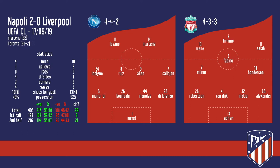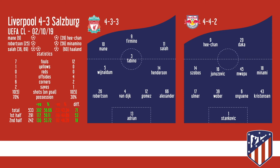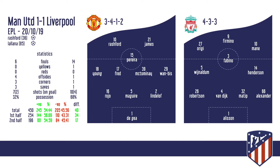Next game was Liverpool-Salzburg, again 4-3-3, with Liverpool having the majority of possession — some stats with total first and second half percentages. Next game, Man United-Liverpool in the English Premier League, again 4-3-3, finished 1-0. Liverpool had 68% possession, with 245 positive passes out of 450. First and second half stats follow.